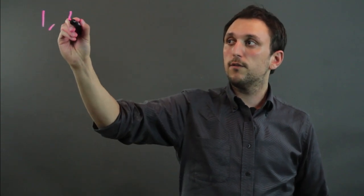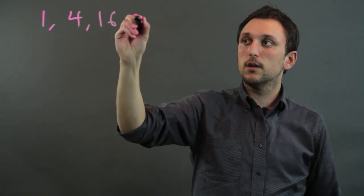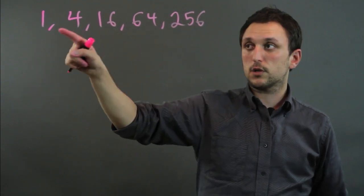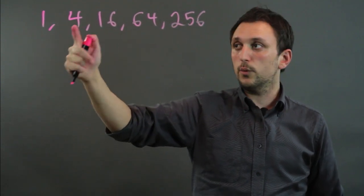So if we have 1, 4, 16, 64, 256, this is a geometric sequence in which the multiplier is always 4.